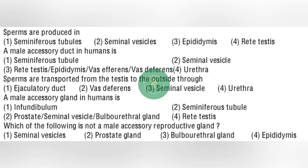Next question: sperms are transported from the testes to the outside through — it is option number 4: urethra. Next question: a male accessory gland in humans is — it is option number 2: prostate, seminal vesicle, bulbo-urethral gland. Next question: which of the following is not a male accessory reproductive gland? — it is option number 4: epididymis.